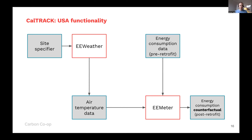EE Meter is the counterfactual generation software. The intuition behind it is relatively simple: it creates a statistical regression of external temperature data against smart-metered energy consumption data, analysing how responsive energy consumption is to external temperature. The real benefit is scalability — increasingly large numbers of people have smart meters, and we can get external temperature data from satellite sources or weather stations. EE Weather is a tool that allows you to download that external temperature data by simply providing a site specifier in terms of latitude and longitude, downloading half-hourly temperature data — currently for the US and Australia.